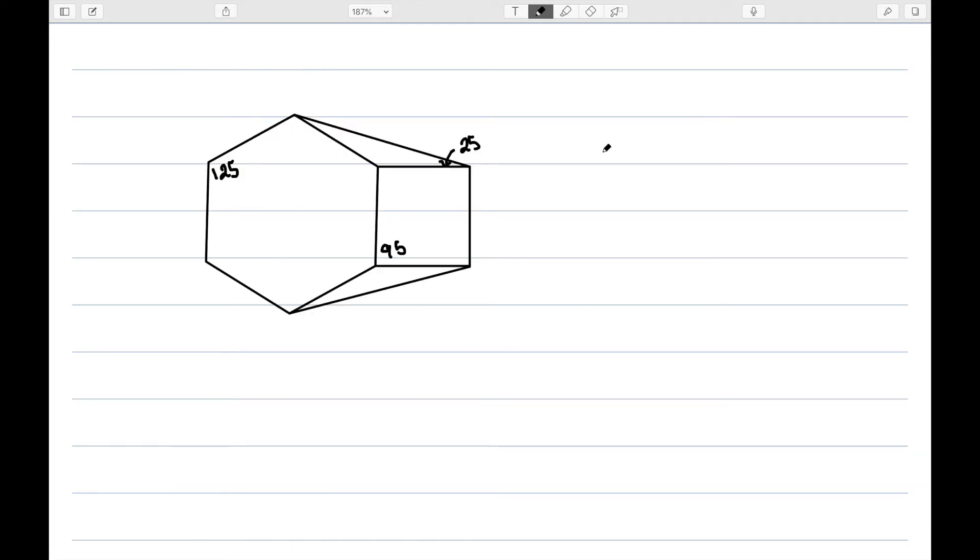This is my next example. Here I have a regular hexagon attached to a regular quadrilateral and two isosceles triangles. And I want to find the excess of each. Let's start with the hexagon.